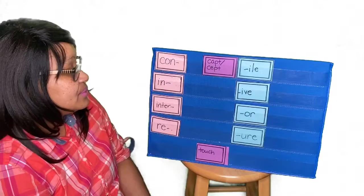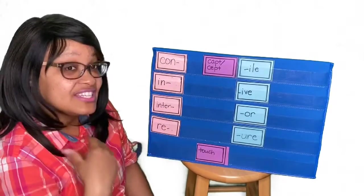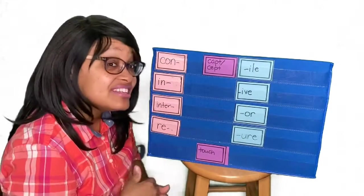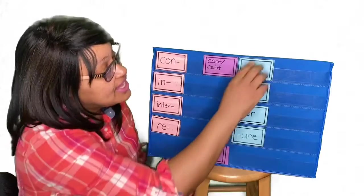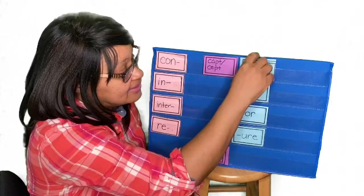Of or relating to. I'm not sure if we need a prefix in this case. Because our suffixes pretty much will tell if it's an action, if it's a process, if it's relating to something. So, let's see. We have -al, like of or relating to. Maybe it's -al.